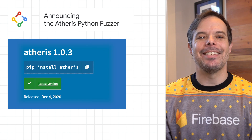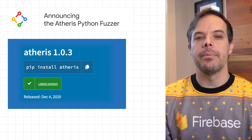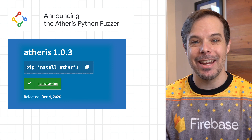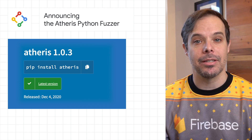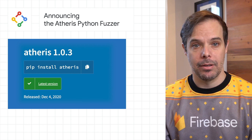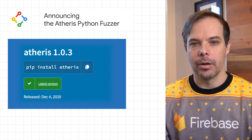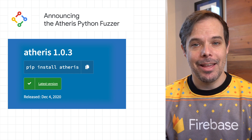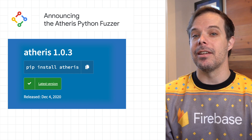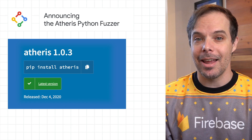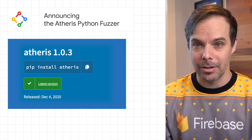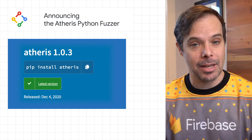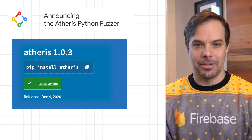Fuzz testing is a well-known technique for uncovering programming errors and is traditionally used on native languages such as C or C++. Last year, we built a new Python fuzzing engine called the Etherus fuzzing engine, and we just released it as open source. To learn more about it and check out some sample code, click through to the post.